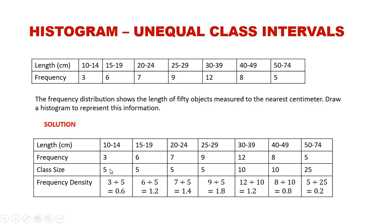Checking the class sizes, the first four intervals — 10 to 14, 15 to 19, 20 to 24, and 25 to 29 — each have a class size of 5. However, 30 to 39 has a size of 10, 40 to 49 also has a size of 10, and 50 to 74 has a size of 25.